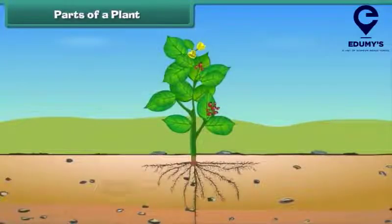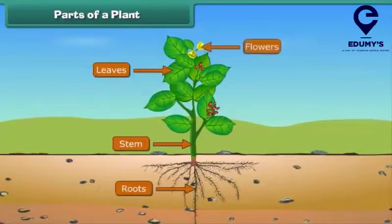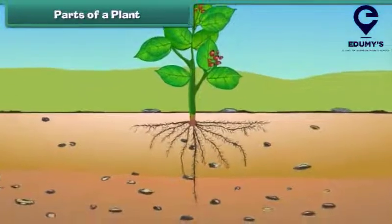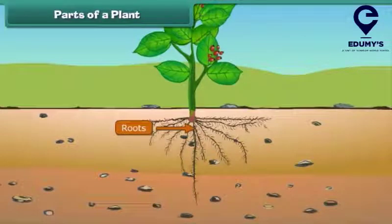The main parts of a plant are roots, stem, leaves, flowers, and fruits. Let us know them one by one in more detail. Roots are the lower part of a plant — they grow in soil and help the plant to get water and minerals from the soil.